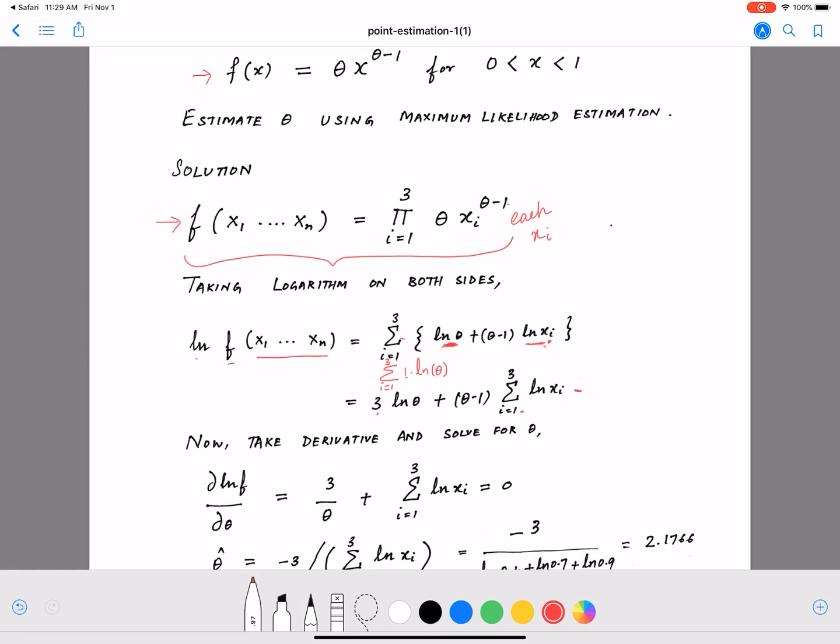Now, how do we compute the maximum likelihood? We take the derivative and solve for theta. We take the derivative, set it equal to 0, and solve for theta.